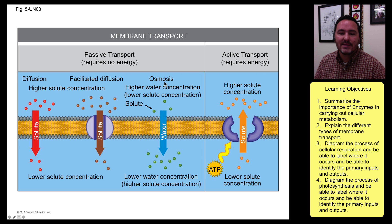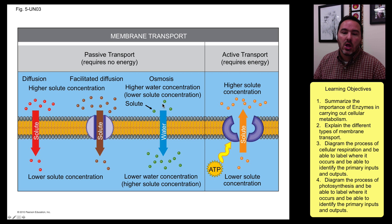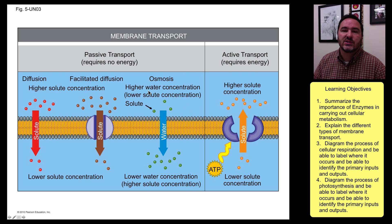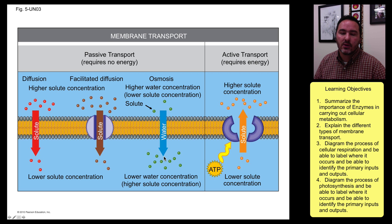The third type of passive transport is called osmosis. This is a type of diffusion, but we have a special term for it because it deals with water molecules. Water molecules move across the membrane freely, but they move from an area of low solute concentration to high solute concentration. For example, if there's very little salt on one side and lots of salt on the other, the water molecules move toward the higher solute concentration side.